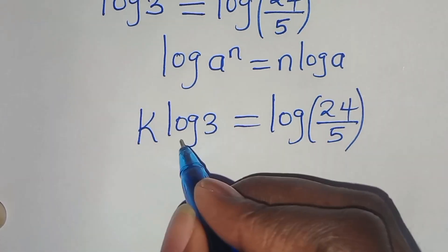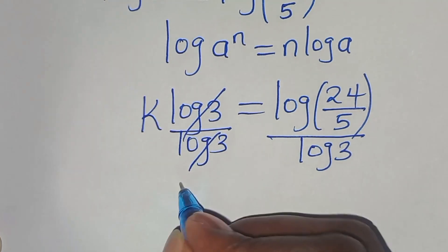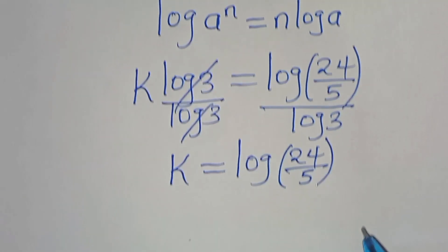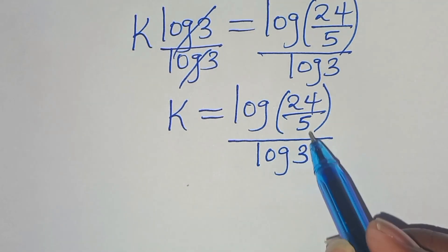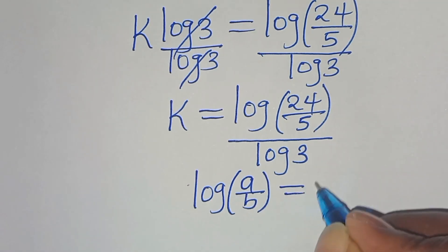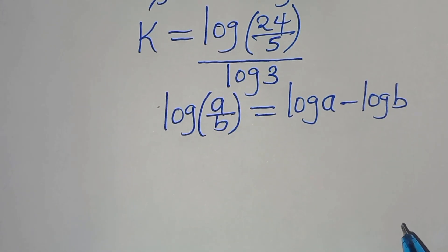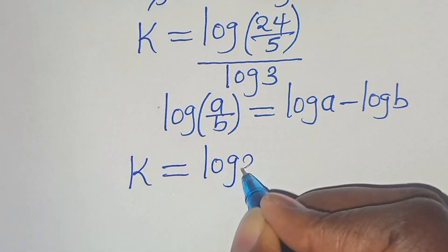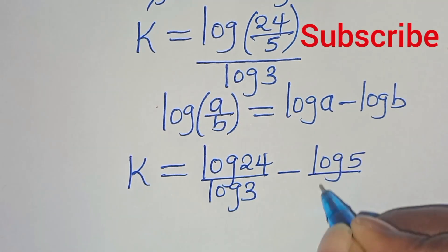Dividing both sides by log(3), we get k = log(24/5) / log(3). Now applying the quotient logarithm property — log(a/b) = log(a) − log(b) — this becomes k = log(24)/log(3) − log(5)/log(3).